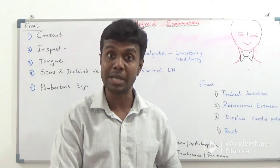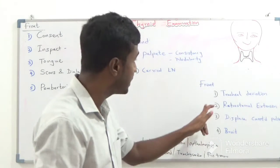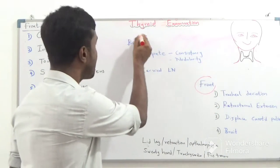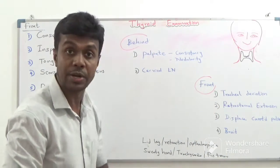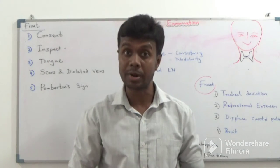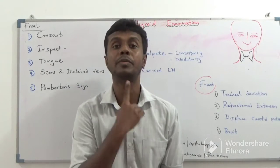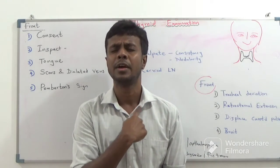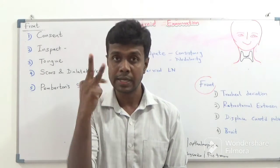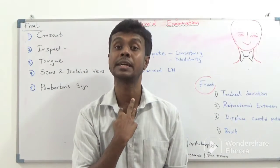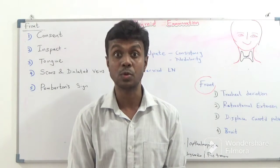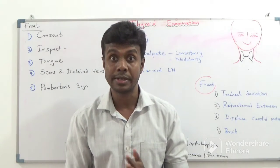After completing the examination from behind, come back to the front. Look for tracheal deviation — palpate the trachea from top to bottom to check whether it is deviating to the right or left side. Keep two fingers in the suprasternal notch and look for the midline to easily identify tracheal deviation.